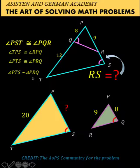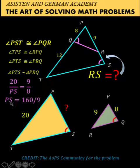Now, since the two triangles are similar, their corresponding parts are proportional. So we can now form this proportion. 20 over side PS is equal to 9 over 8. And solving for PS, PS is equal to 160 over 9.